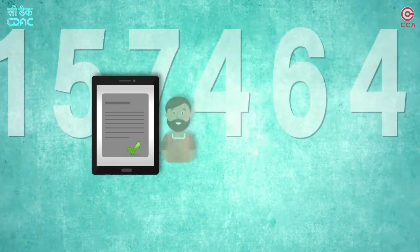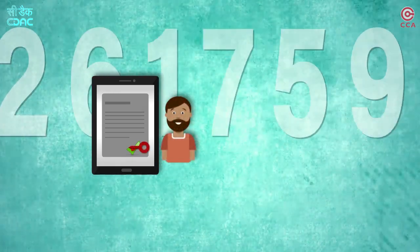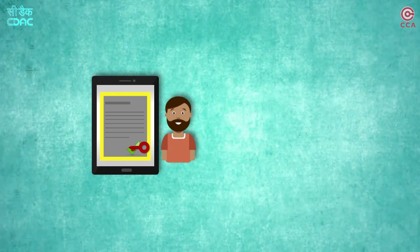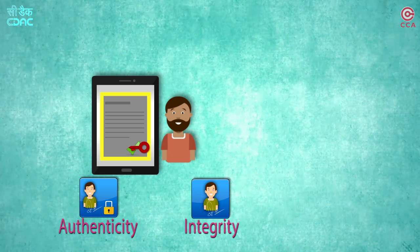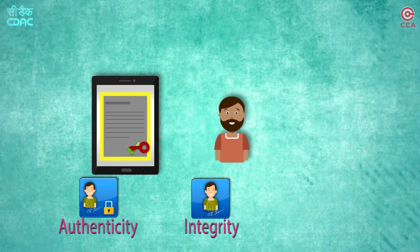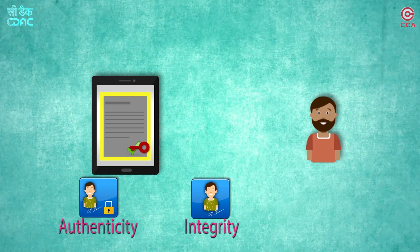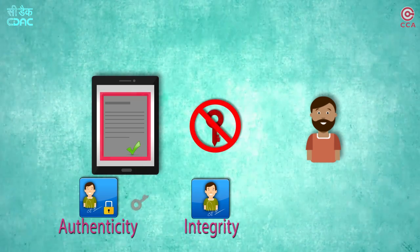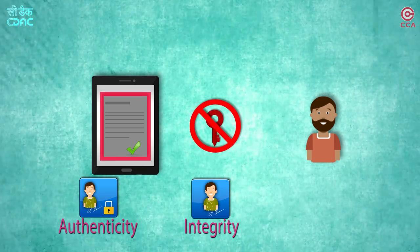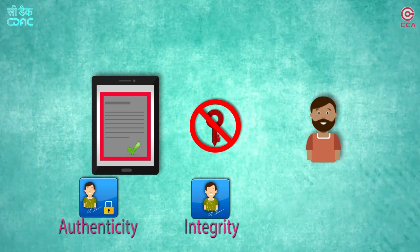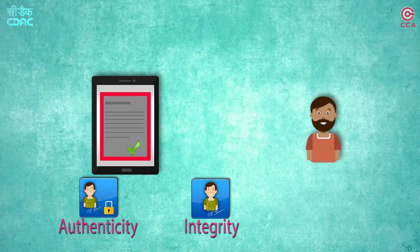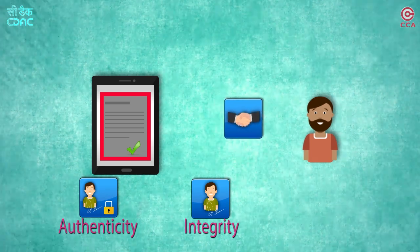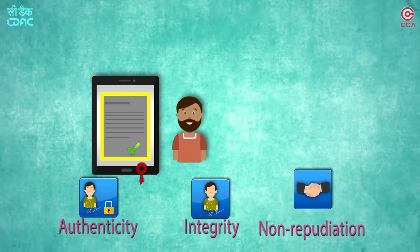Therefore, the digital signature is a number that is derived based on the signer's secret private key and the contents of the document. A digital signature can guarantee integrity and authenticity of the signed document. But what if the signer later denies digitally signing a document by claiming that the private key used for signing is no longer used by him, or saying somebody had misused his private key? We need a reliable and trustable mechanism such that once a signer digitally signs, he or she cannot later deny it — i.e., ability for non-repudiation.